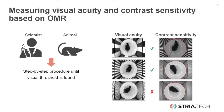Similarly, we can keep the stripe width constant and make the contrast of the stripe pattern weaker and weaker. Eventually the contrast is too weak, the animal does not show the optomotor reflex, and we have found the animal's contrast threshold.